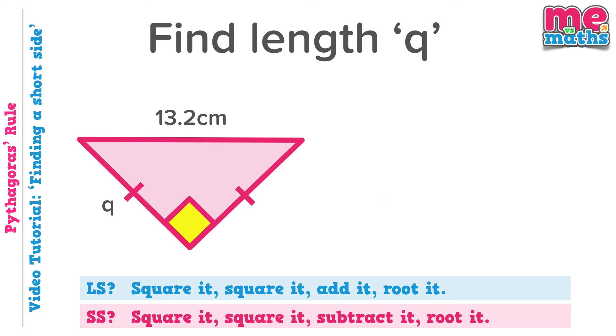OK, one last tricky example to finish off with. Our first step, as it should always be, check if we're looking for the longest side or not. We're trying to find Q, and we can see that 13.2 is the hypotenuse, so Q is one of the shorter sides. So I know the rule that I think I want to use. Now the reason this is quite a different and difficult question is that we've only been given one side. So we seem to have nothing to subtract.